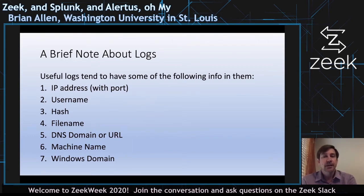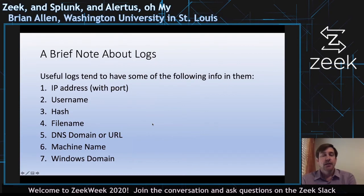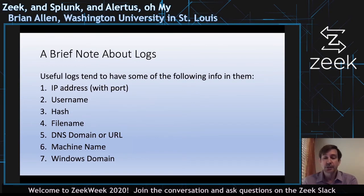Where is all the useful data? These are some of the useful data types I like to look for in log files: IP addresses, usernames, hashes, file names, DNS domains or URLs, machine names, and Windows domains. Most log files have at least two — usually IP address and something else — but the Alertus logs check off four of these different types of information, which makes it a pretty good log file.